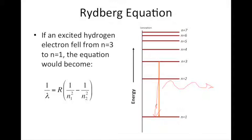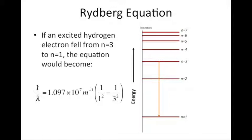The Rydberg equation would become as follows. 1 over the wavelength is equal to the Rydberg constant times 1 over 1 squared, where 1, that's the shell it's falling to, the first shell, minus 1 over 3 squared, where this is the shell it's falling from.